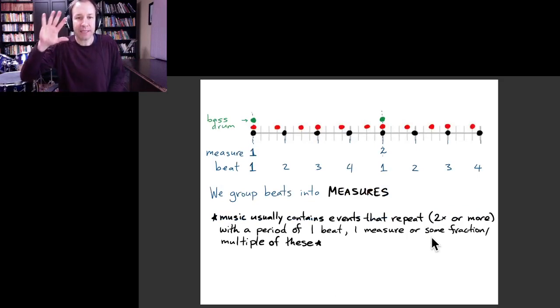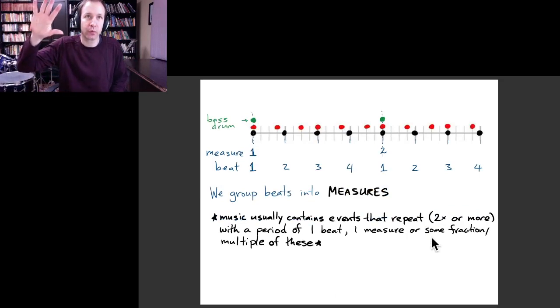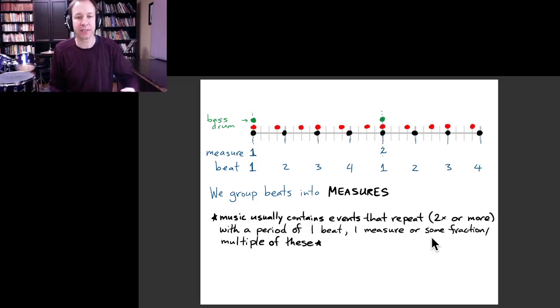And so in terms of what do we choose for the beats, how do we if we have a piece of music, how do I know what these beats are? And so it's just kind of a choice. And we choose the beats so that when we do that, the music contains events that repeat with a period of one beat or two beats or three beats or four beats. Very often what you find is that once you've chosen the beat, then there are certain patterns that happen maybe almost every beat, like that there is a musical note almost every beat.